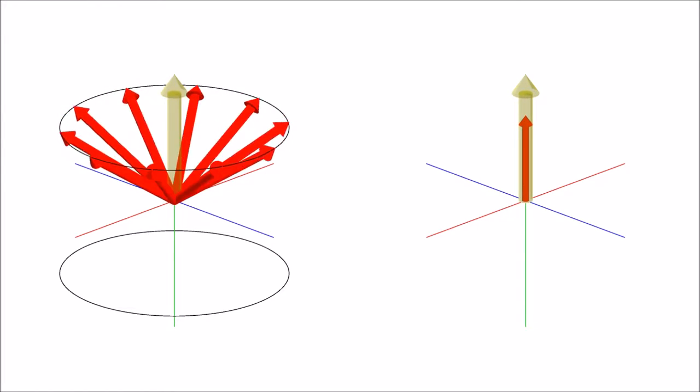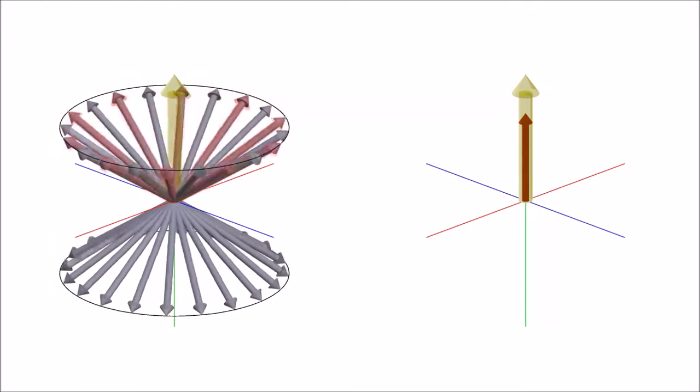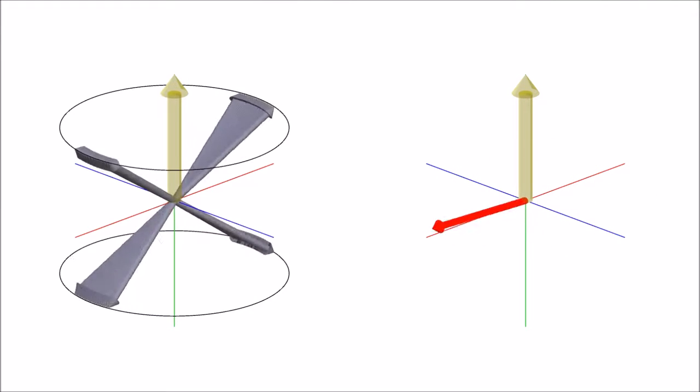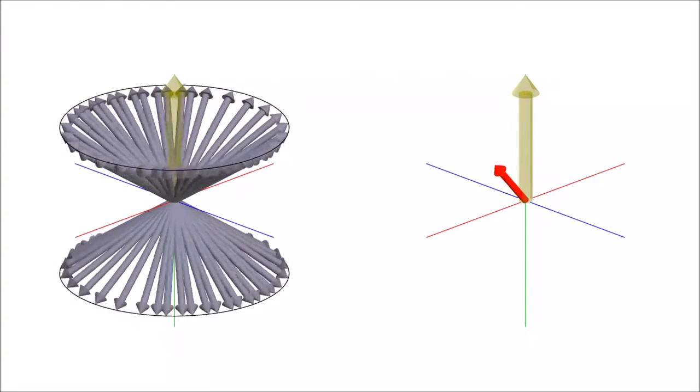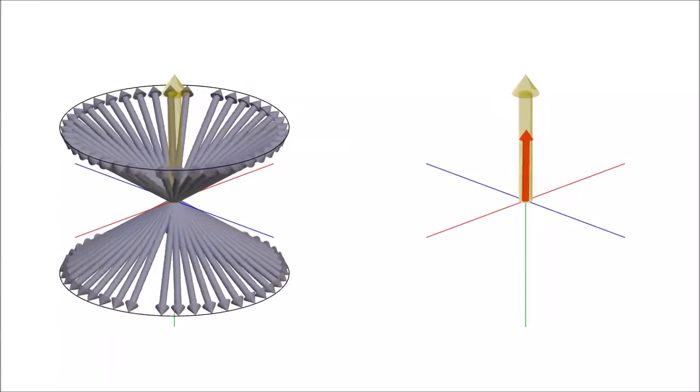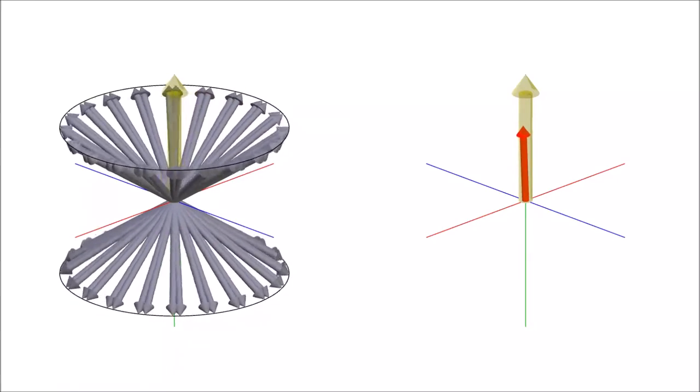But what happens with all of the gray dipoles? Doesn't the magnetic field affect them as well? It does, but after the 90 degree pulse is over, they still cancel each other out in both the z direction and within the x-y plane, so they don't contribute to the signal. This concept is important to understand how T1 weighting works.